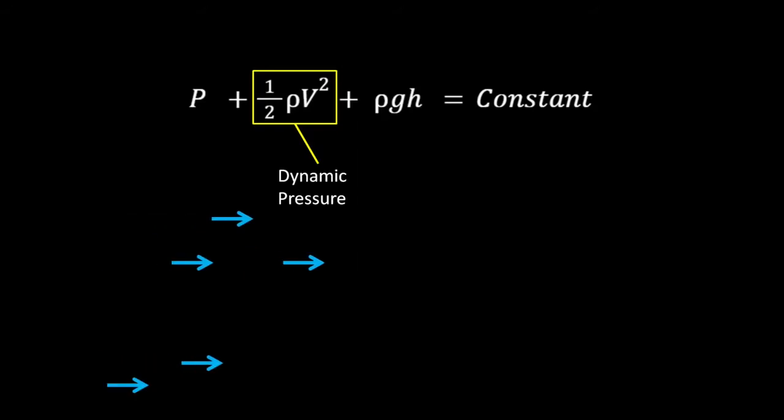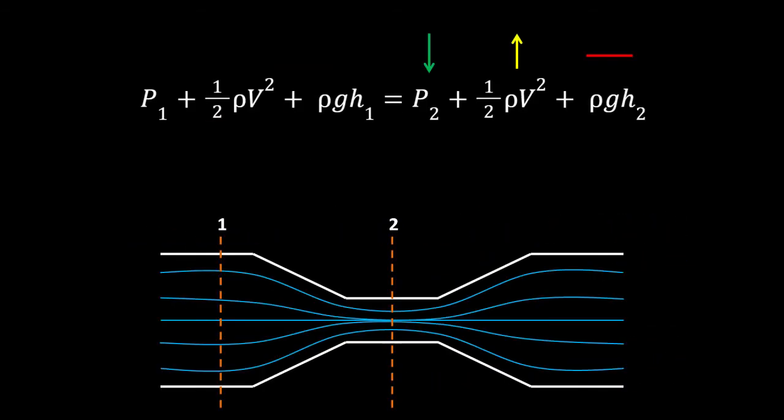The dynamic pressure on the other hand is the energy of the fluid in motion. The faster it is going the more dynamic pressure it has which explains why with a reduction in the piping like we saw before the dynamic pressure increased.